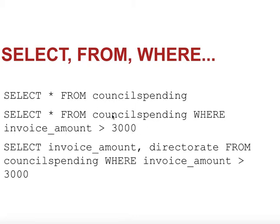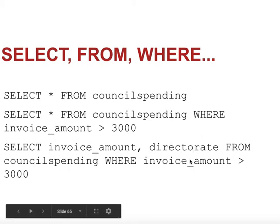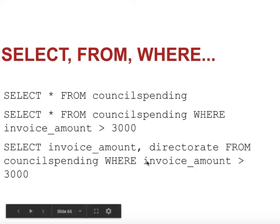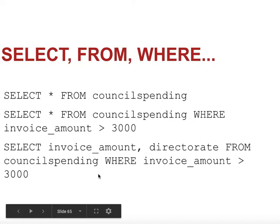Obviously, you don't always have to select everything. So in this third example, you can see we're selecting two fields — invoice_amount and directorate — from this table, where this field is greater than 3000. It's important to point out that if you want to use any fields in your query — to apply a filter or add up a number — then it has to be selected first. If you're filtering on a column that hasn't been selected, you'll get an error.